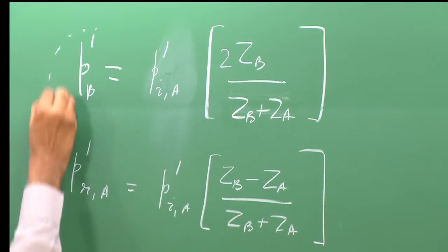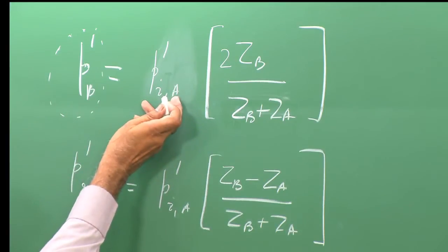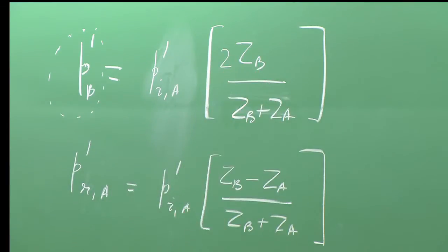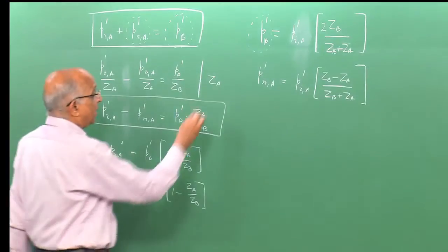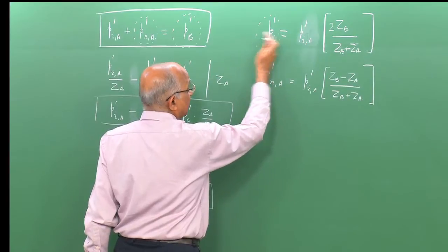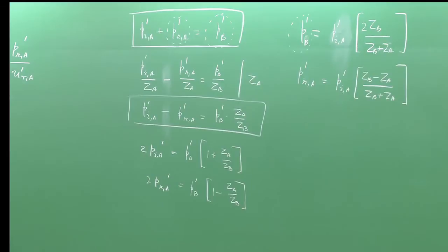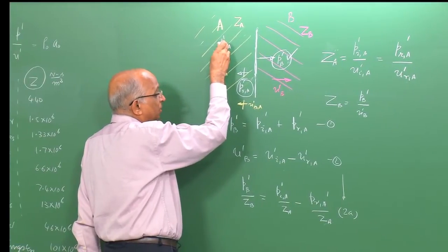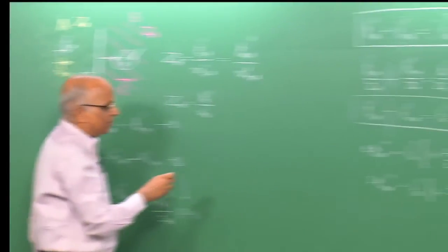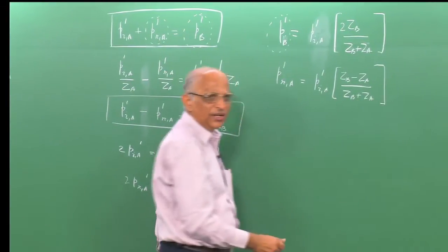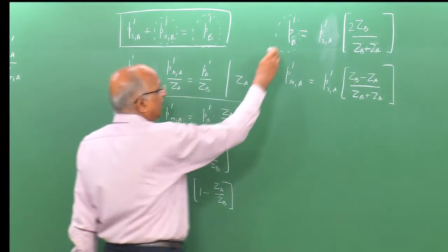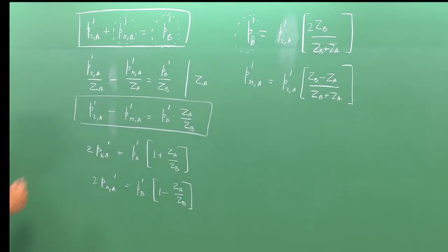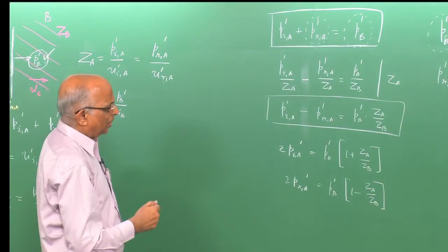We have derived: the transmitted pressure in medium B is p_b prime = 2Z_b / (Z_b + Z_a) × p_ia, and the reflected pressure is p_ra = (Z_b − Z_a) / (Z_b + Z_a) × p_ia. Let us now discuss what these results physically represent.